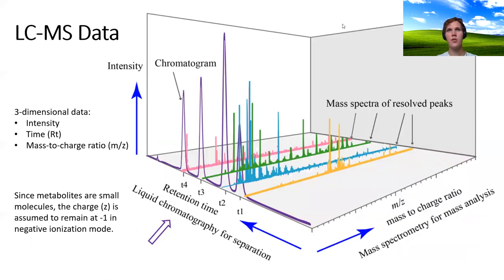LC-MS data is three-dimensional. We have intensity, which is a function of how many of a given signal is being detected at any one point in time. We have retention time, which represents when a molecule is coming off of the HPLC column. And we have mass to charge ratio, which in metabolomics is essentially just a reference to the mass of the molecule. Because metabolites are small, the charge is assumed to remain at one — either negative one in negative ionization mode or positive one in positive ionization mode. These data are acquired on negative ionization mode.